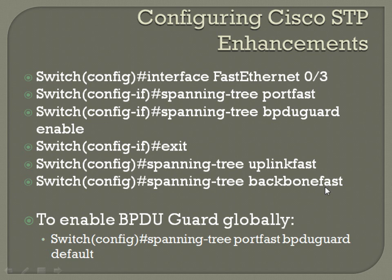To enable BPDU Guard globally — like if you're setting up PortFast on individual ports but don't want to add the 'spanning-tree bpduguard enable' line to each one — from global configuration mode use 'spanning-tree portfast bpduguard default', and it will be set on every PortFast port.